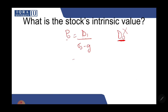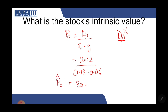So D1 is 2.12, r is 0.13, and the growth rate is 6%. The intrinsic value of the stock comes out to 30.29. This is the estimated value of the stock.